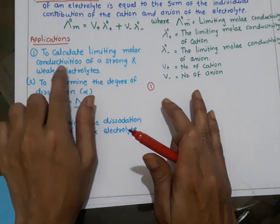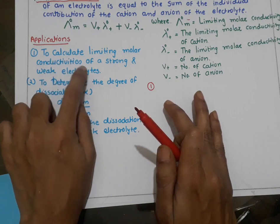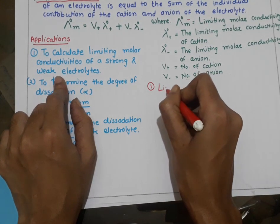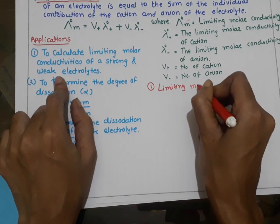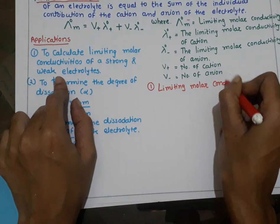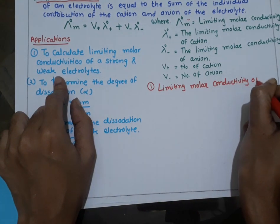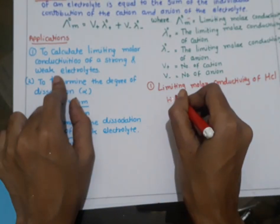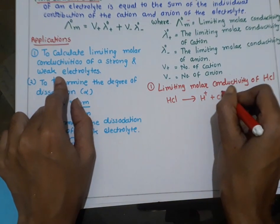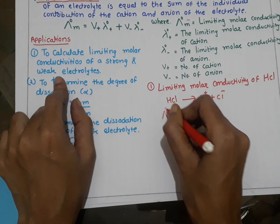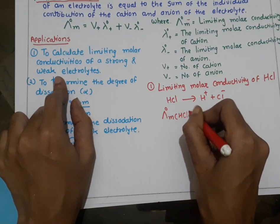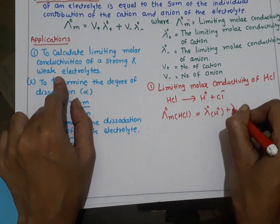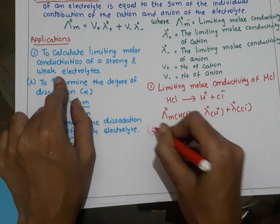Now for the first application: calculating the limiting molar conductivity of strong and weak electrolytes. Let us take the example of HCl as a strong electrolyte. When HCl dissociates, it gives H plus and Cl minus ions. Therefore, the limiting molar conductivity for HCl can be written as lambda naught m of HCl equals lambda naught m of H plus plus lambda naught m of Cl minus.